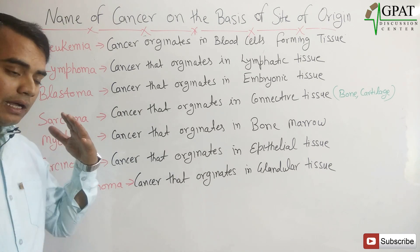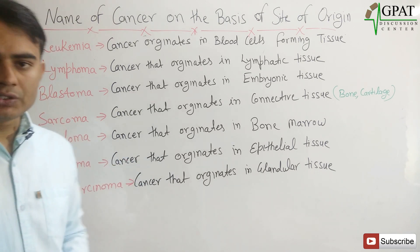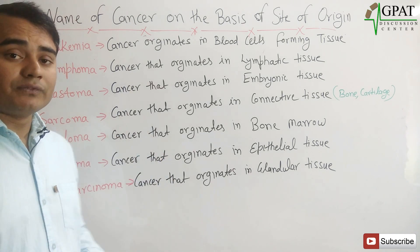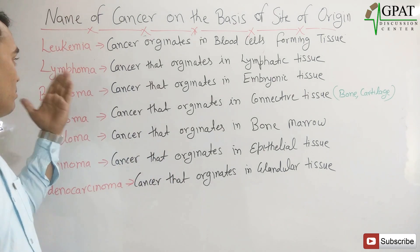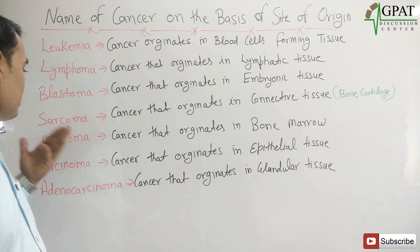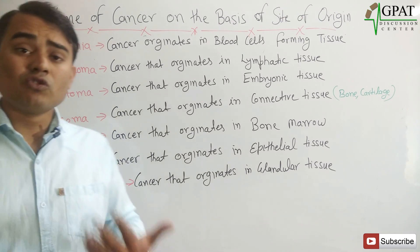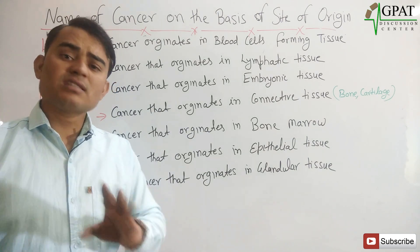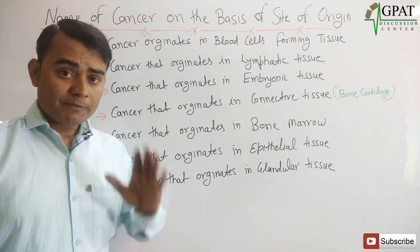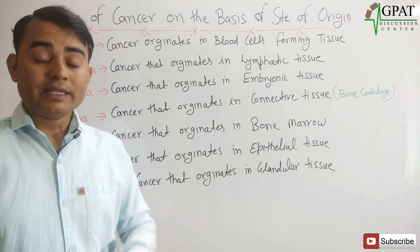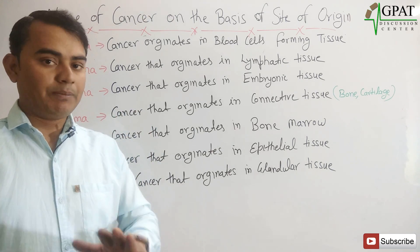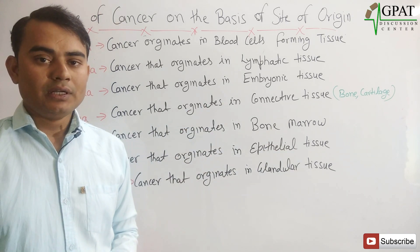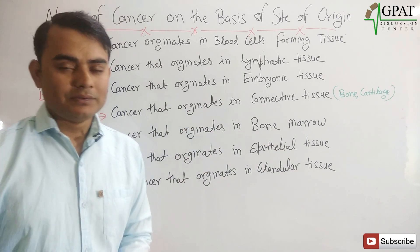I am sure maximum students do not know the exact meaning of these words — leukemia, lymphoma, blastoma, sarcoma, myeloma, carcinoma, adenocarcinoma. For students, these are just cancer type words, but you should be clear about which word is related to which type of cancer tissue. Thank you.